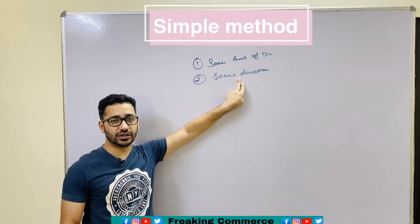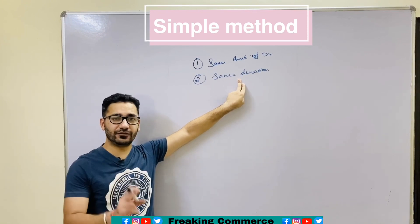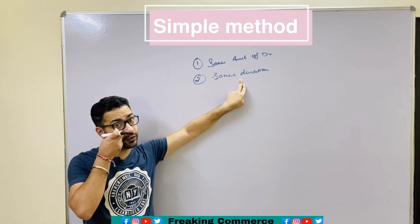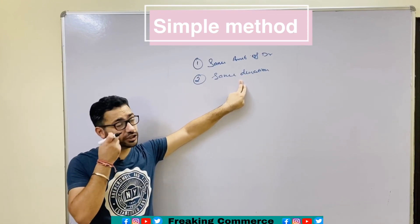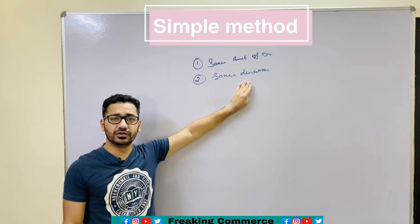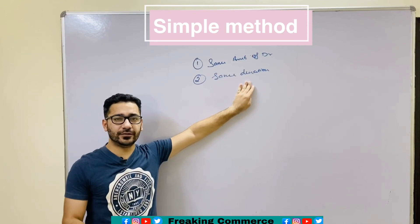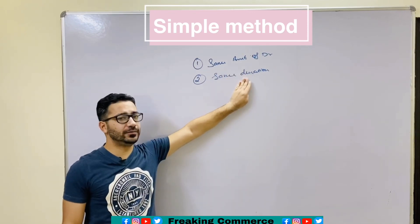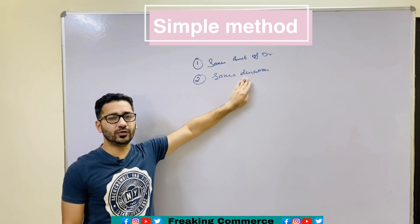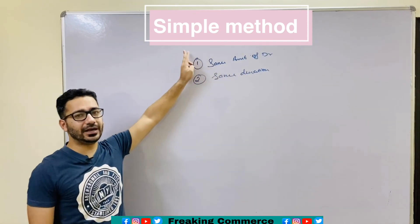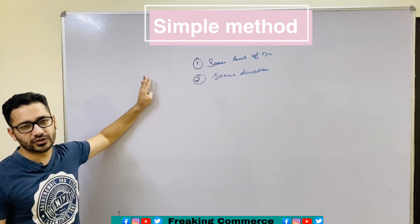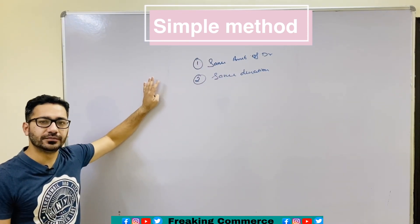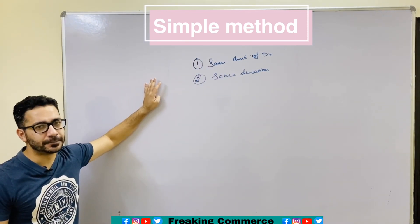Same duration means first of every month — after 30 or 31 days he is going to withdraw the same amount. So same amount and same duration. Then only we can apply this method. Otherwise, we are not going to apply the simple method; we will go with the product method.